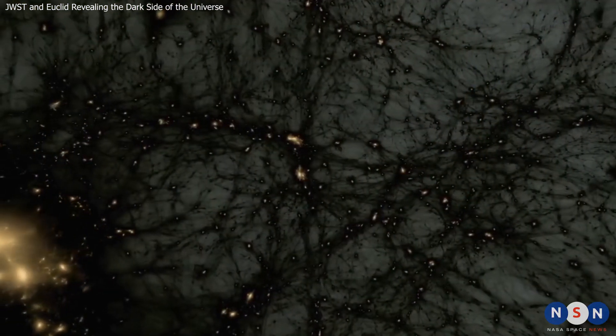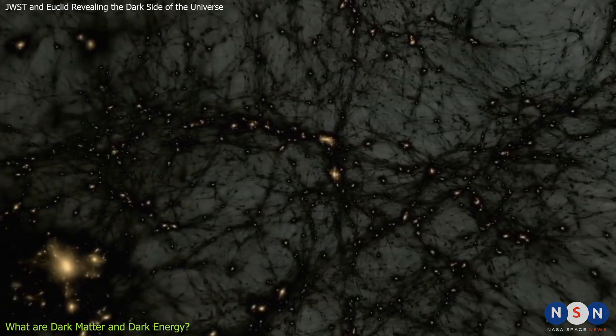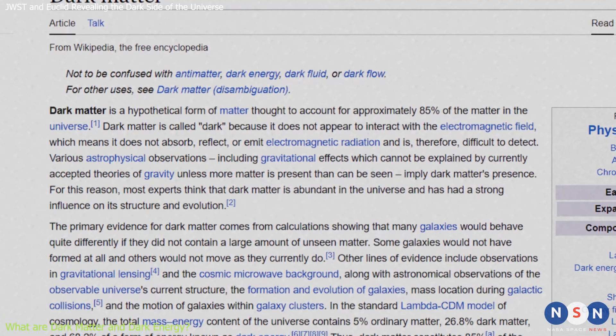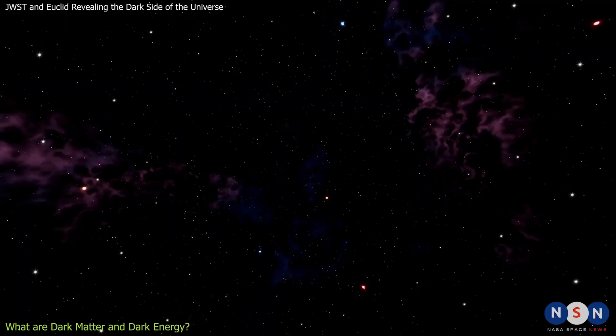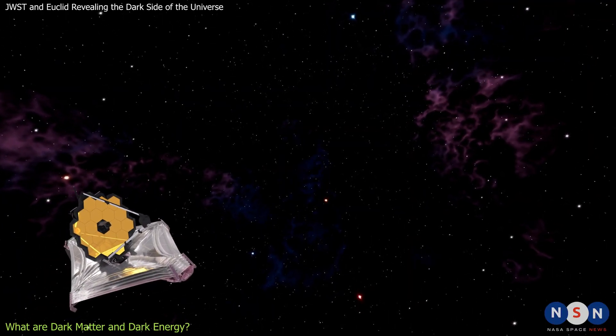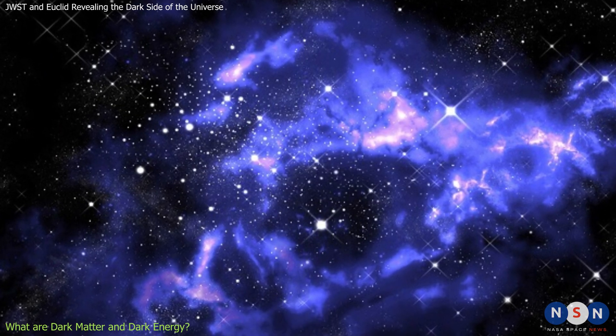So, what are dark matter and dark energy, and why are they so mysterious? Well, let's start with dark matter. Dark matter is a type of matter that does not interact with light or any other form of electromagnetic radiation. That means we can't see it or detect it directly with our telescopes or instruments. But we know it exists, because we can see its effects on the visible matter around it.